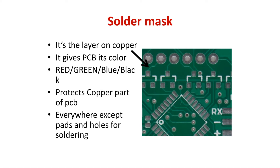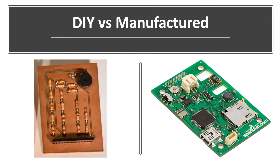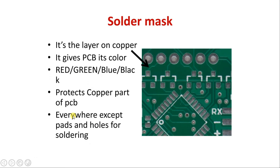The solder mask protects the copper parts of the PCB from oxidation and environmental hazards that can reduce the life of the copper. It is present everywhere on the PCB except at the points where soldering must be performed. The solder mask is applied when you get your PCBs manufactured. Usually at home, we cannot apply the solder mask because it requires a lot of processes — filming processes under specific machines. So if you are prototyping at home, it's good to experiment with bare boards, but when ordering PCBs they will come in a sophisticated format with a solder mask.